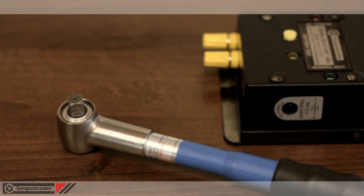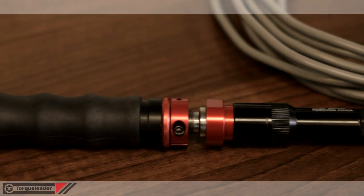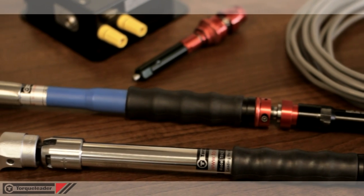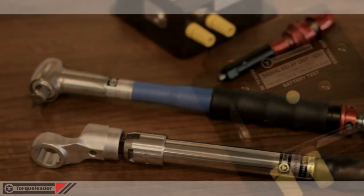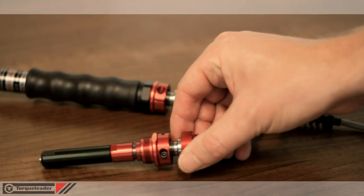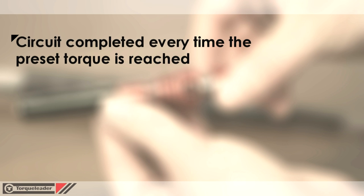In this video we are looking at the Torque Leader Switch Operated Signal System. Most Torque Leader slipping and breaking wrenches can be supplied with an optional switch system. With the switch tool, a circuit is completed every time the tool reaches the preset torque.